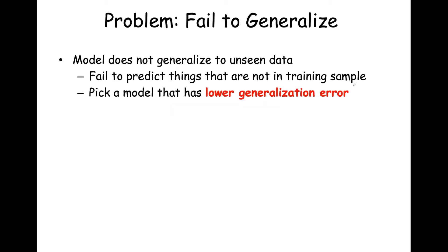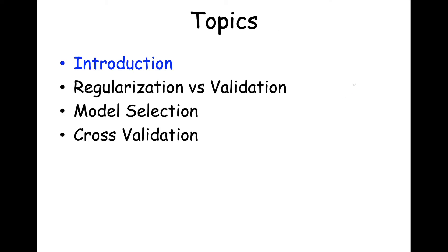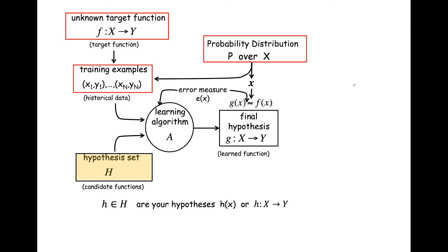A model that does not generalize well to unseen data will fail to predict things not in the training sample. You want to pick a model or function from your hypothesis set that has low generalization error — good out-of-sample performance. Two approaches to doing this are regularization and validation, and today we're going to focus on the validation part.